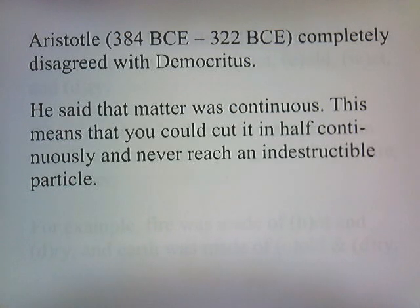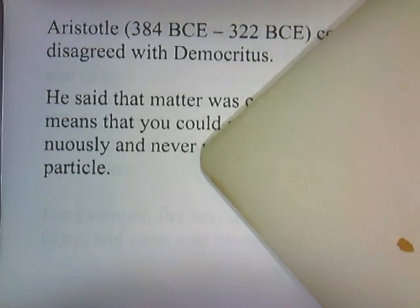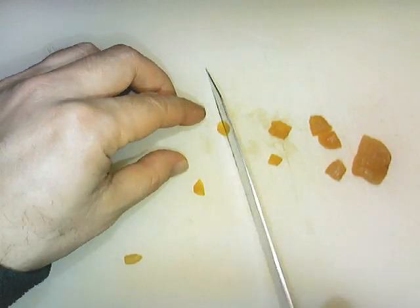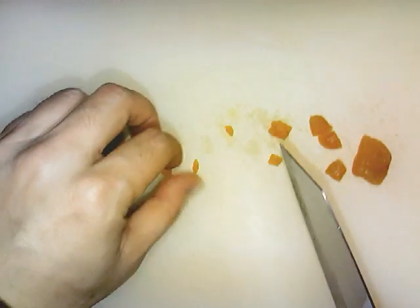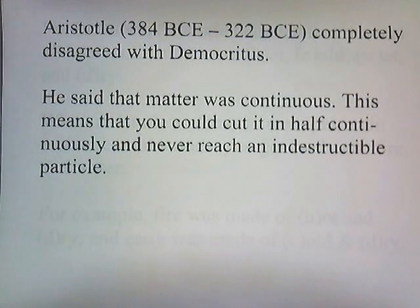Aristotle completely disagreed with Democritus. He said that matter was continuous — this means that you can cut it in half continuously and never reach an indestructible particle. So I can continue cutting a piece of apricot in half forever and ever. Every time you cut it in half, there's always going to be a tiny little piece left over, and that tiny piece can be cut in half again. You can just keep cutting it in half forever — matter is continuous. You don't reach a tiny indivisible particle; you can just keep slicing it forever and it'll get infinitely small.